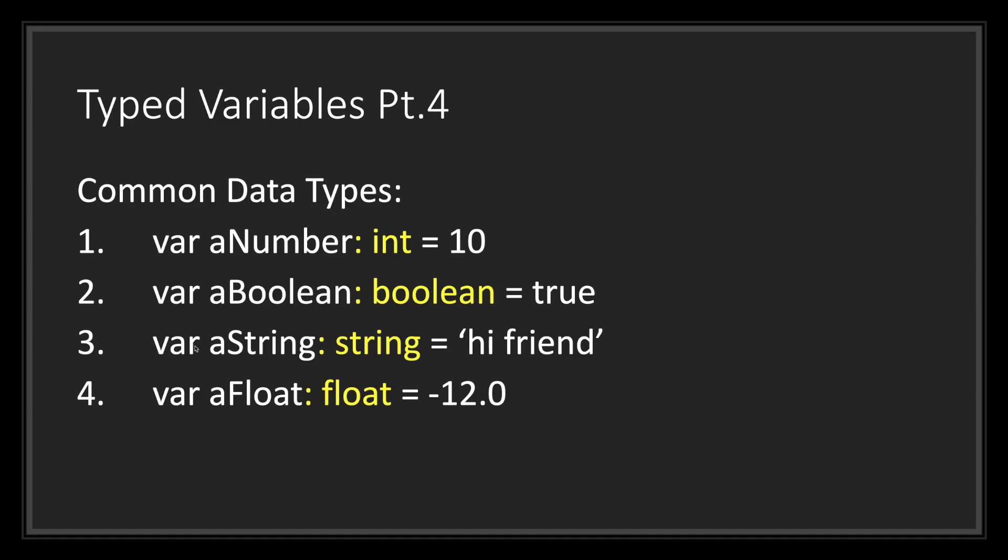In the third example, we have a variable a string with the data type string with the assigned value high friend. In the last example, we have the variable a float with the data type float and it has been assigned the value negative 12.0.